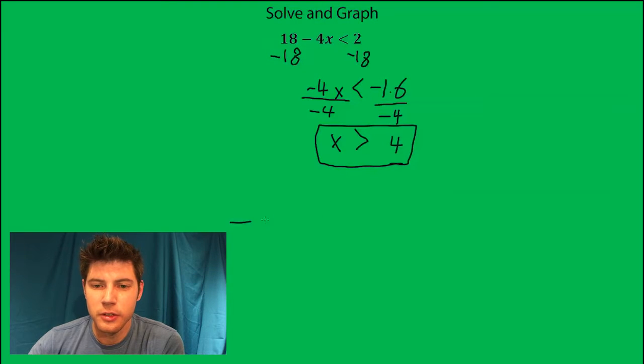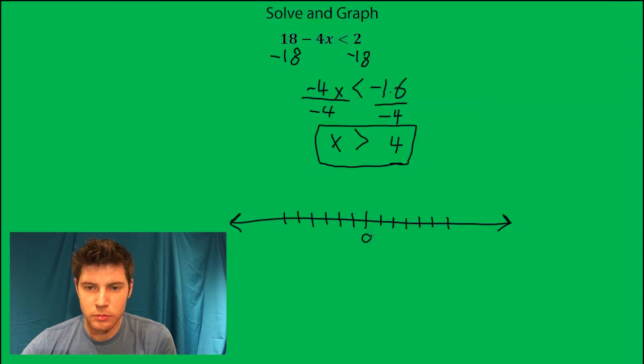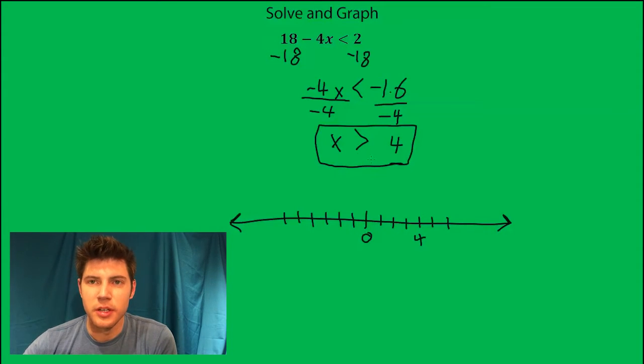And then when we graph it, it says x is greater than 4, so we know we're going to go this way at 4.